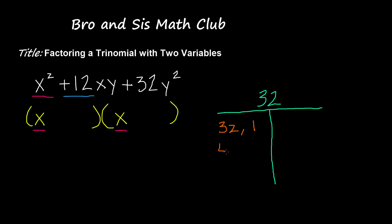We have 4 and 8. We have 16 and 2. So here's the factor pairs of 32.